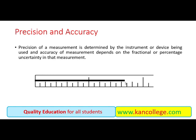Is guess measurement ko significant figures se represent kiya jata hai, ya in numbers ko significant figures kehte hain. Is guess mein jo uncertainty hai, woh in grading lines ke darmiyan kitna fasla hai — yeh lines millimeter ko zahir kar rahi hain, centimeter ko zahir kar rahi hain, micrometer ko zahir kar rahi hain. Agar line centimeter ki hai toh uncertainty ek centimeter ki ho sakti hai. Agar yeh lines millimeter ke distance represent kar rahi hain toh uncertainty millimeter hogi — yani less precise, less accurate — ek millimeter tak chance of error ho sakta hai.